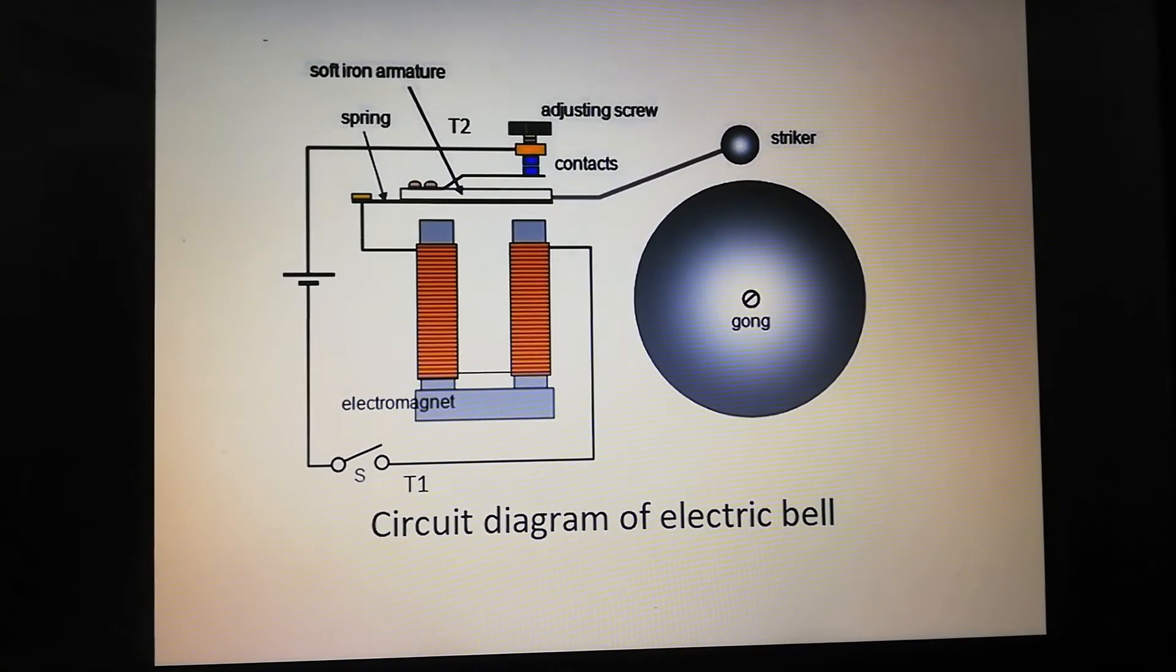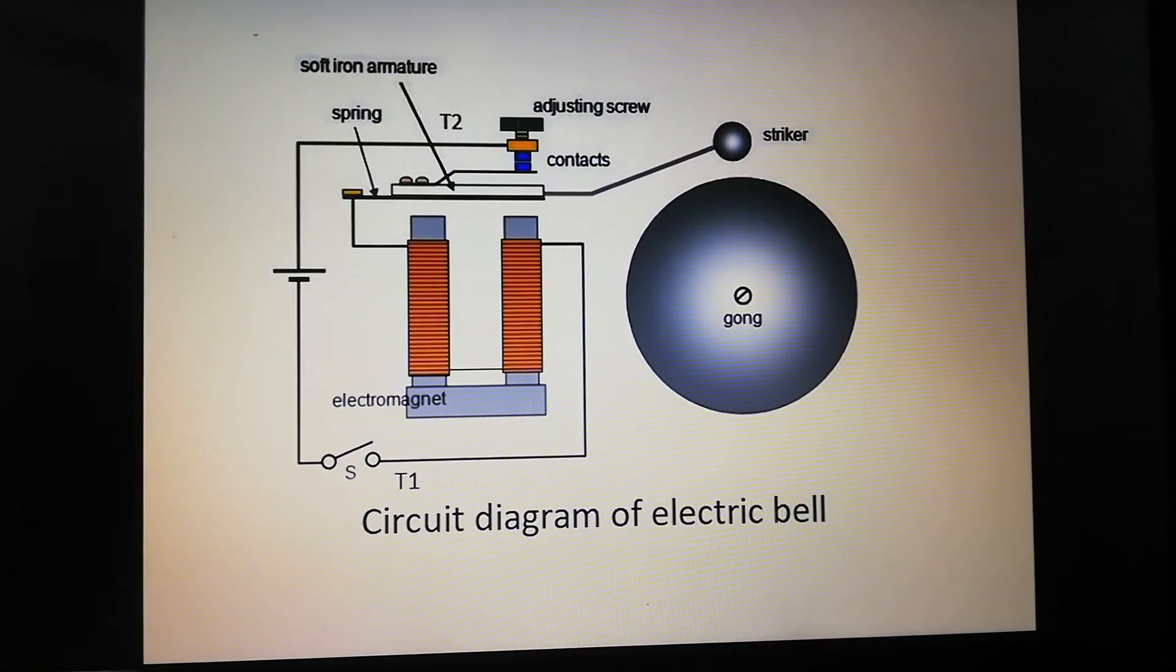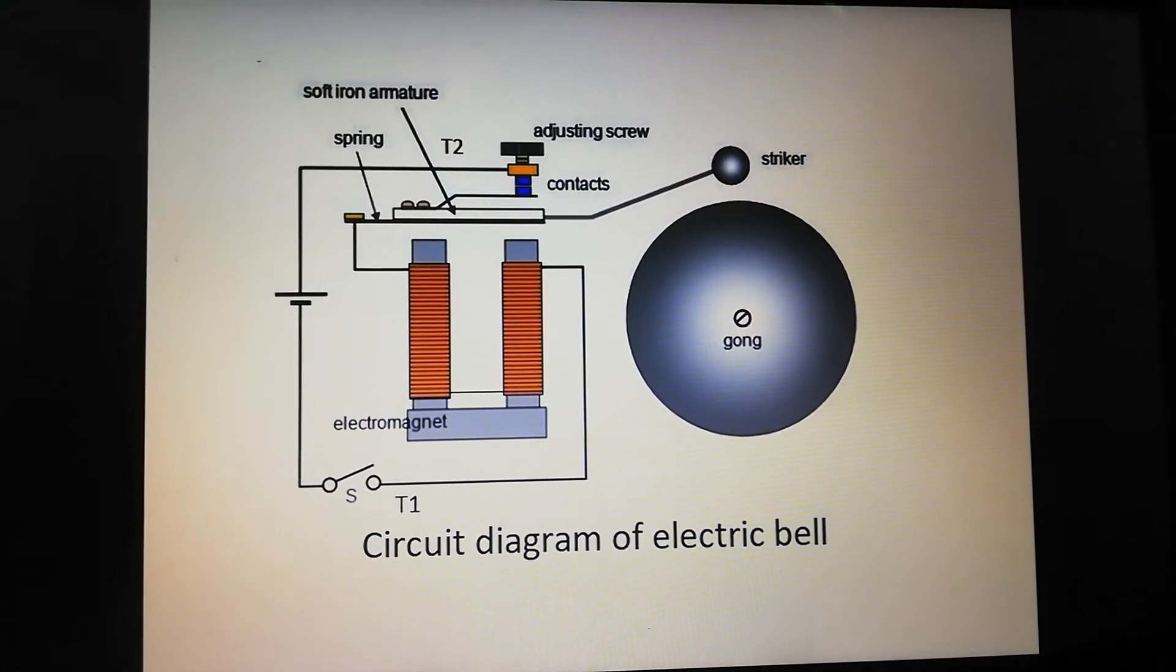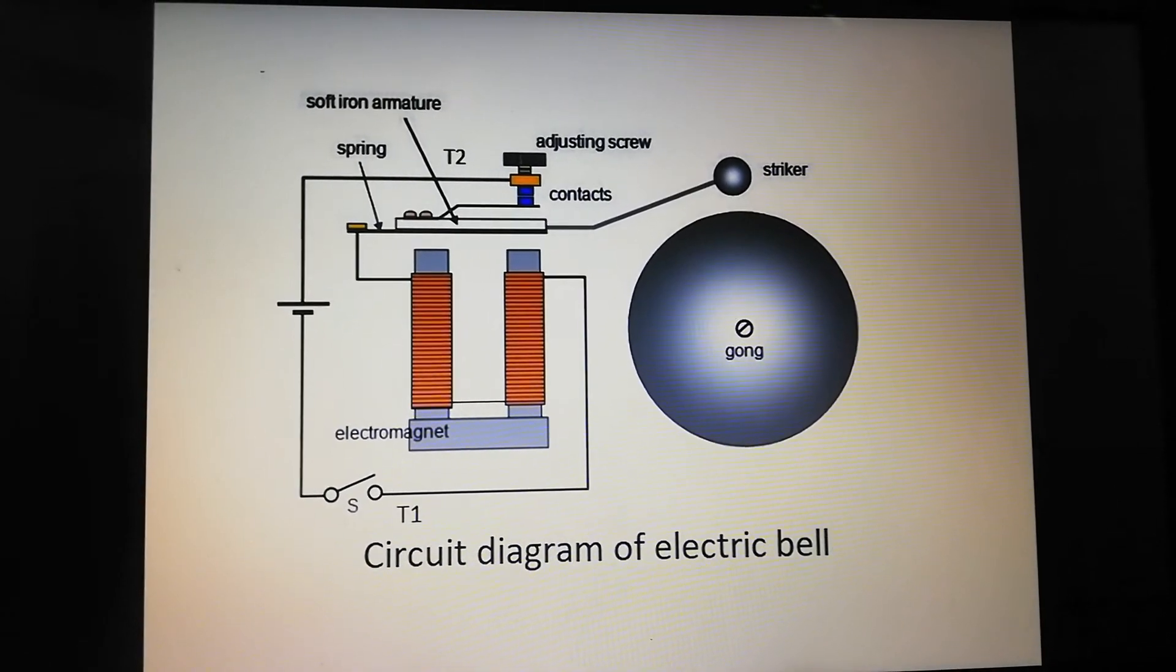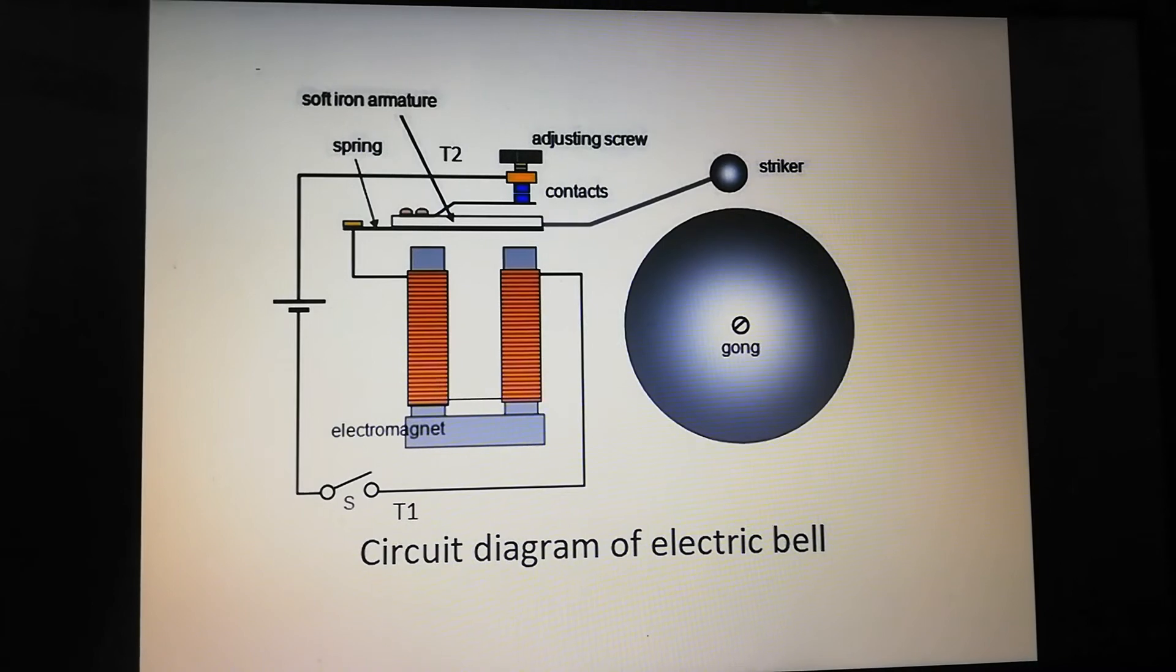When the striking arm strikes the gong, the contact is broken and current stops flowing through the circuit. This causes the electromagnet to lose its magnetic field.